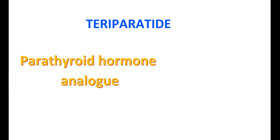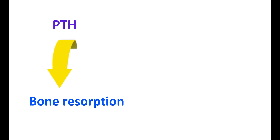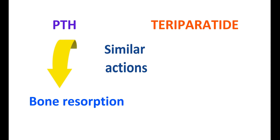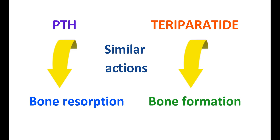Teriparatide is a parathyroid hormone analog which can be used to treat osteoporosis. Parathyroid hormone, commonly known as PTH, controls minerals like calcium and phosphate and mainly increases bone resorption — the process of breaking down bones to release minerals for recycling. Teriparatide is a PTH analog that shows similar actions, but it has a different activity, showing more effect on bone formation rather than bone resorption.